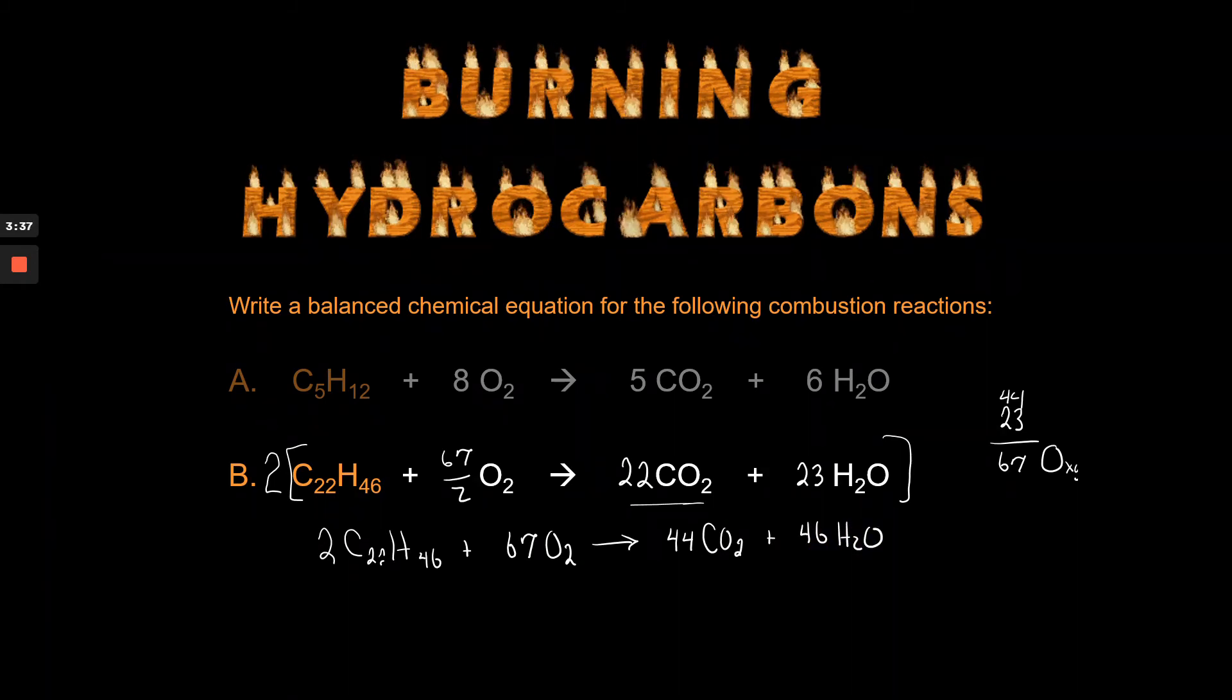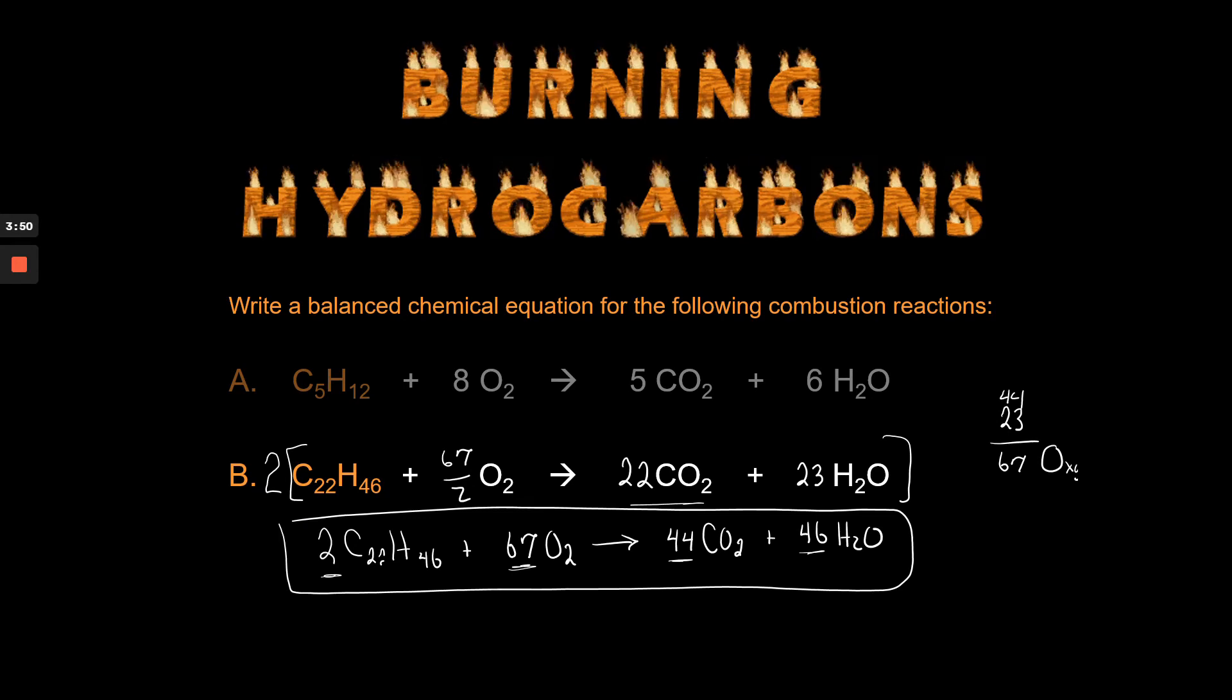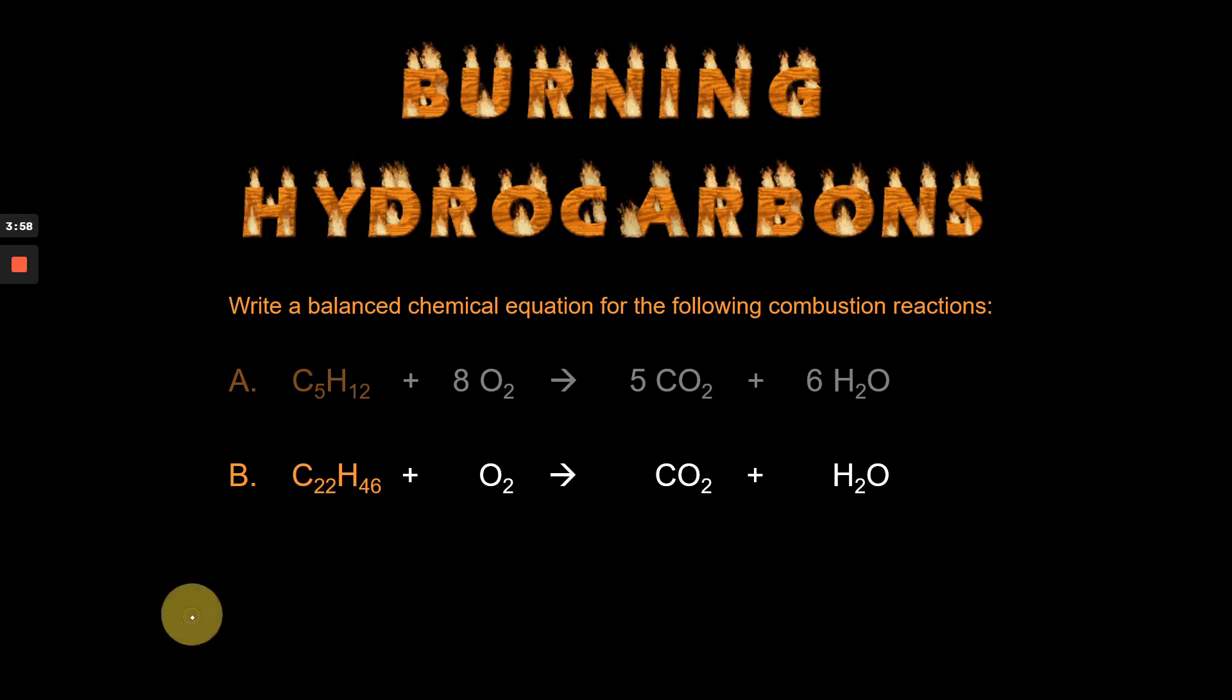What we need to do from here because we can't leave it as a half is take this whole thing and double everything. You end up with 2 C22H46 plus 67 O2 goes to 44 CO2 plus 46 water. And it turns out, you cannot reduce the numbers 2 and 67, 44 and 46. So that is the balanced chemical equation for that reaction. Could you imagine if you were trying to do that with the guess and check method? You would never finish that one.